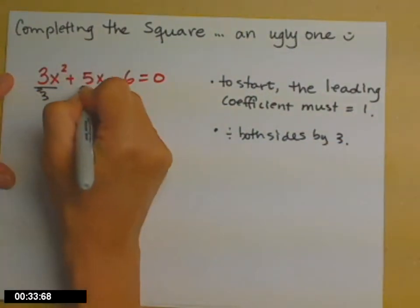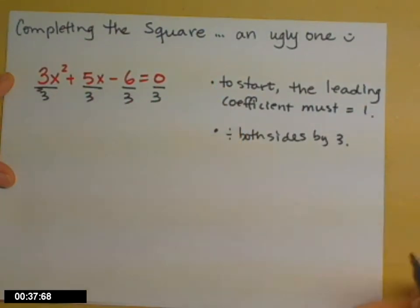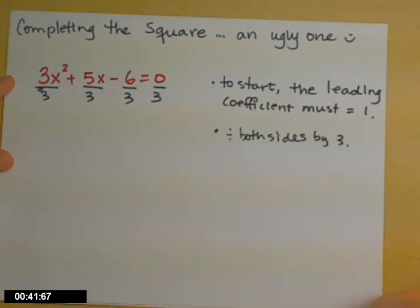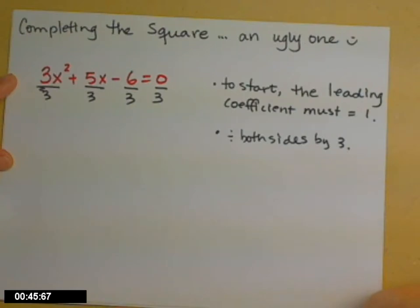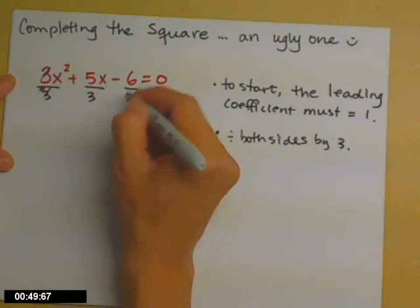Here we go. When we divide the left side, the 3 goes under each term on the left side. You can think about it like multiplying the left side by 1 third and then distributing it. Then we'll reduce each of those that can be reduced.